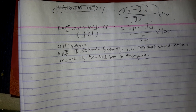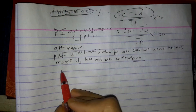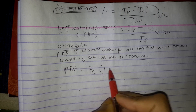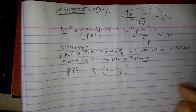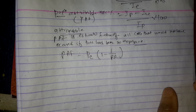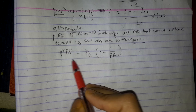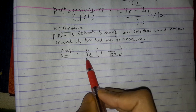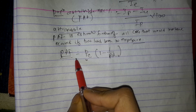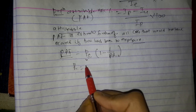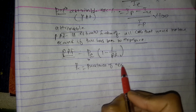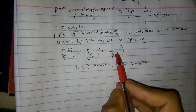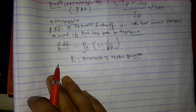Here is another formula for population attributable fraction: PAF equals prevalence of exposure among cases multiplied by one minus one divided by relative risk. Using a cohort study, we can estimate the population attributable fraction from the estimated relative risk and the prevalence of exposure among cases.